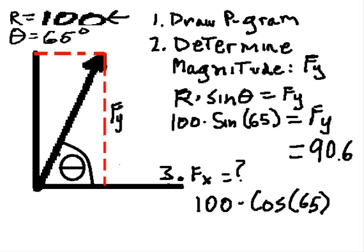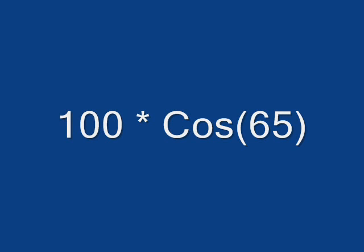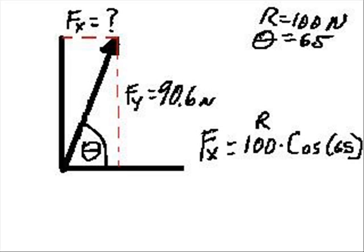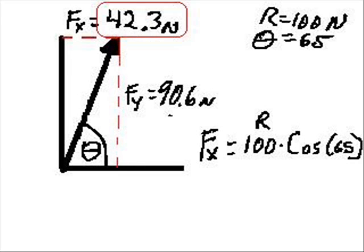So let's do that now. Clear off the calculator, and then 65, then I click on cosine. I get 0.4226. Now I multiply times the resultant, times 100. And I should get 42.26. Yes, I do. So Fx is equal to 42 point, let's round it off to 42.3 newtons. So I got 90.6 newtons for Fy and 42.3 newtons for Fx.